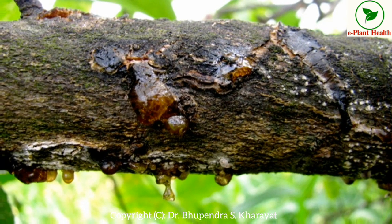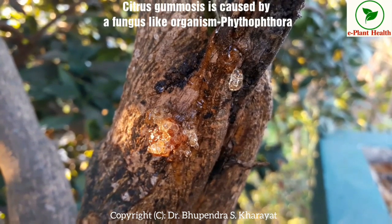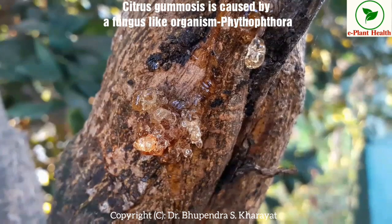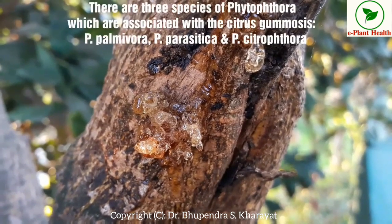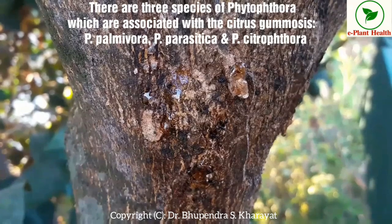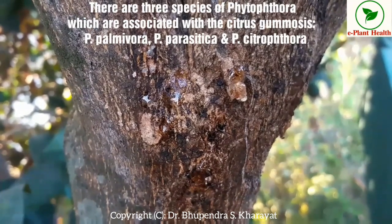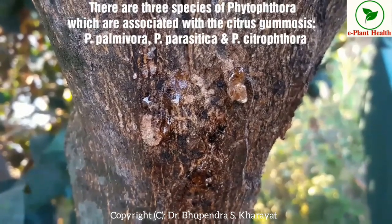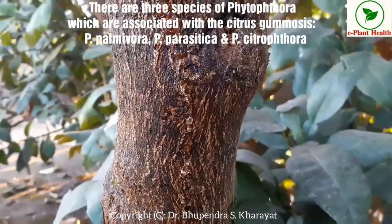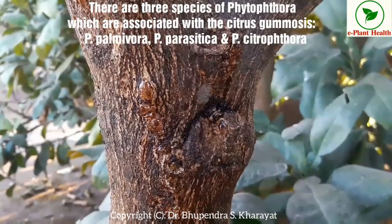Citrus gummosis is caused by a fungus-like organism, Phytophthora. There are three species of Phytophthora associated with citrus gummosis: Phytophthora palmivora, Phytophthora parasitica, and Phytophthora citruthura.